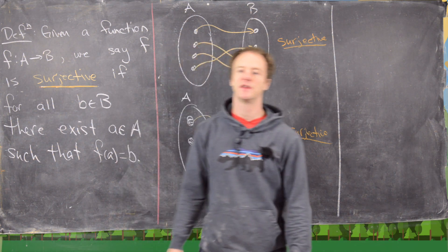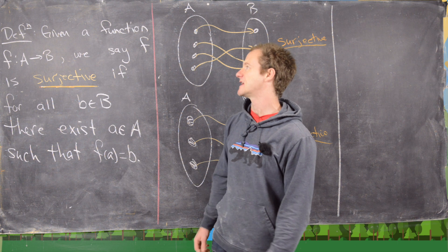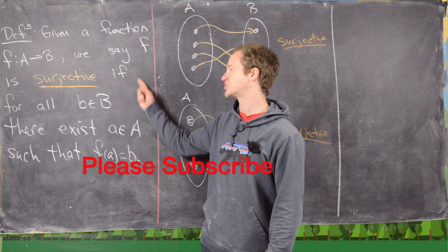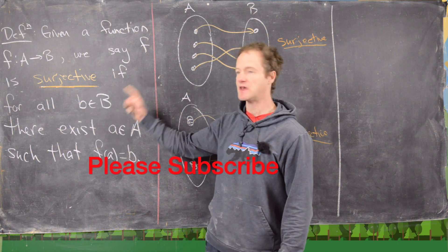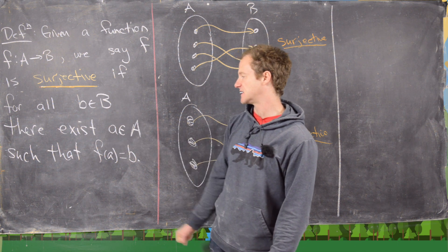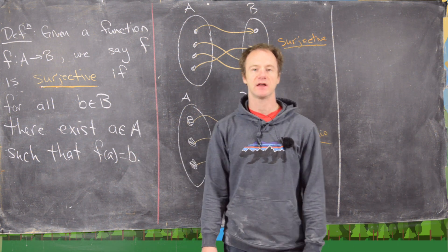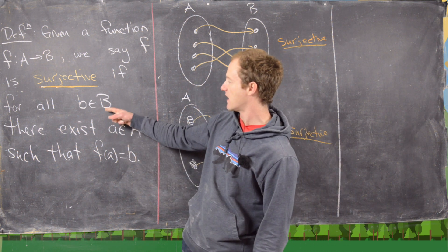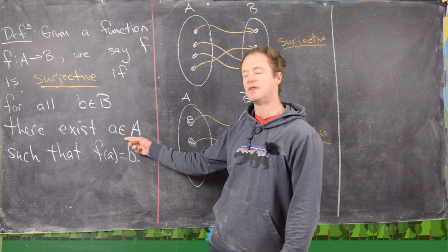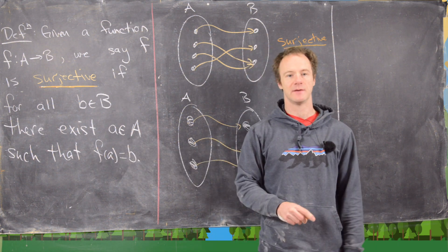In this video we're going to look at the notion of a surjective function. By definition, we say a function from A to B is surjective if for all b there exists an a in A where f(a) equals b. In other words, every element of the codomain has an element in the domain which is mapped to that element.